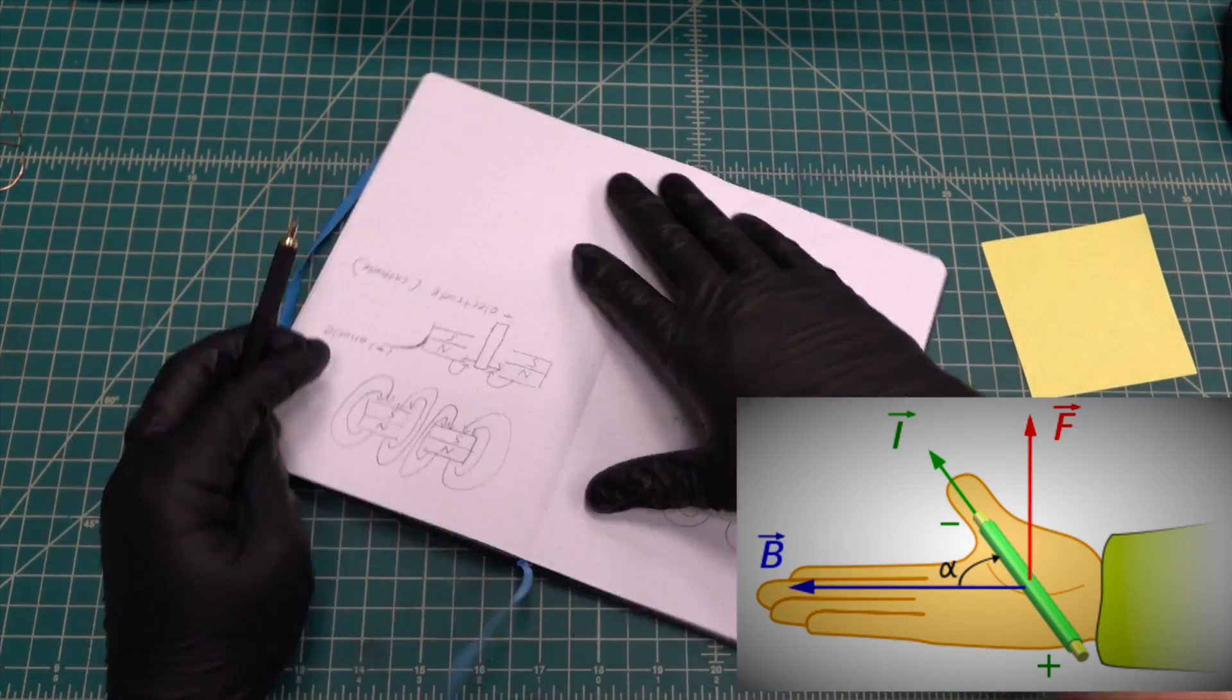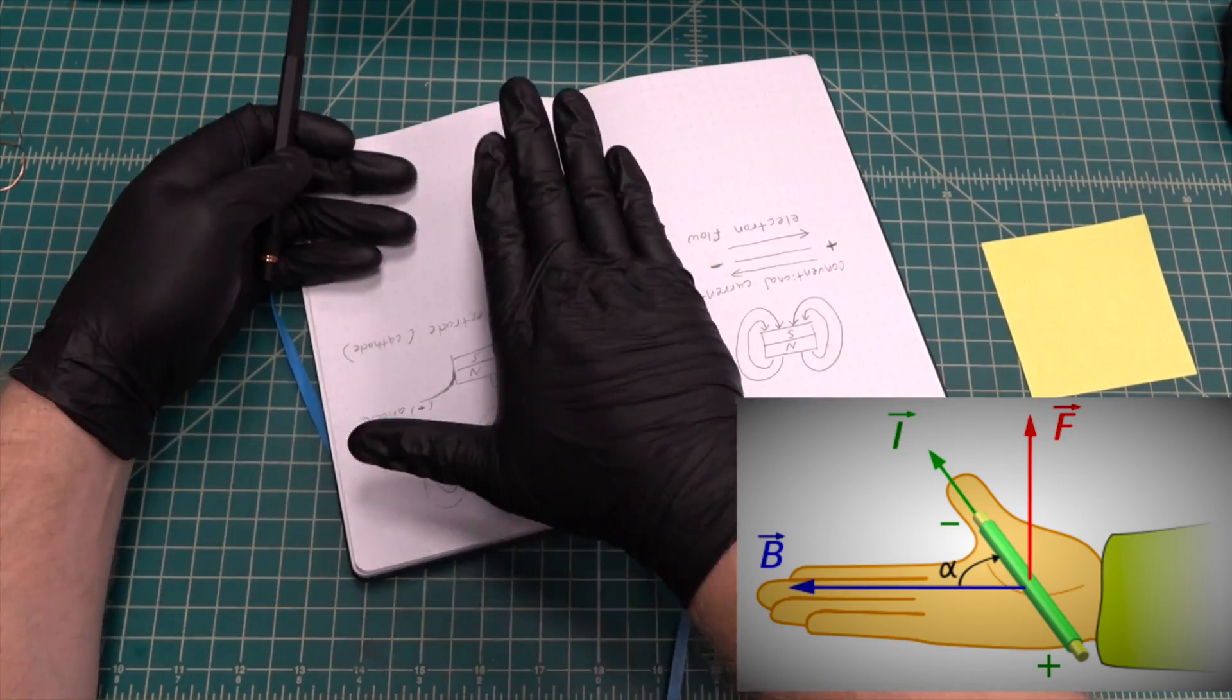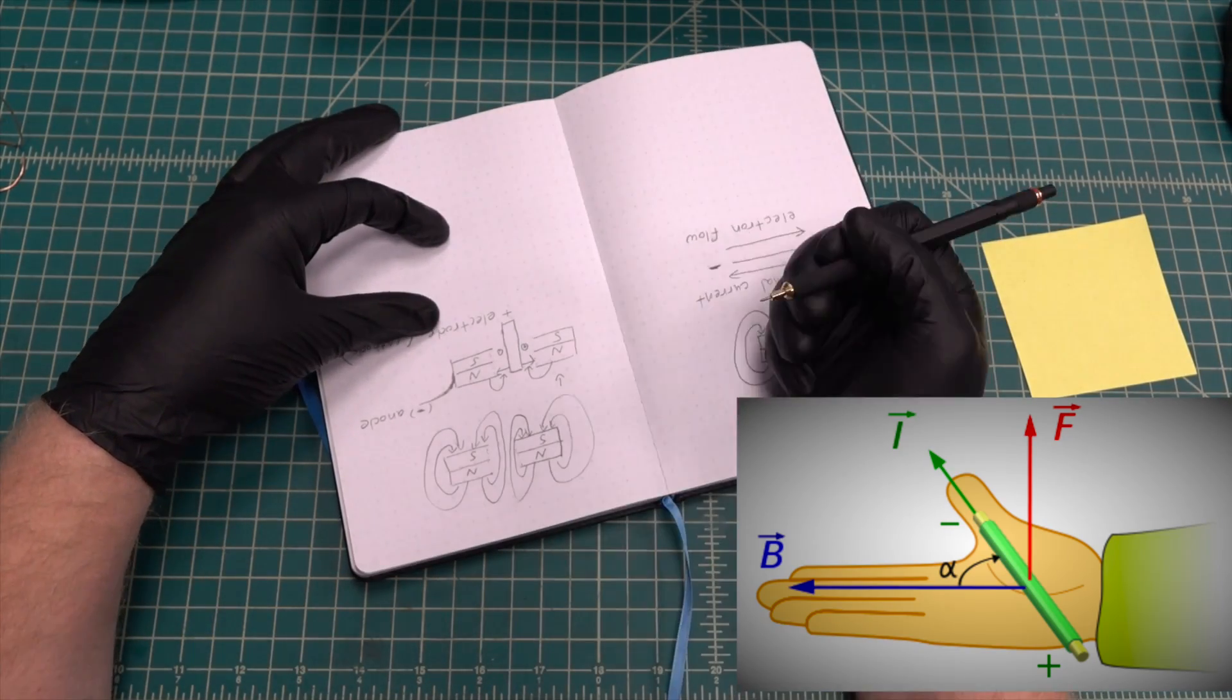Using the right hand rule we can determine the direction that the plasma arc will rotate. If you're looking at the vortex from the north side of our example, the arc will rotate in a counterclockwise direction.